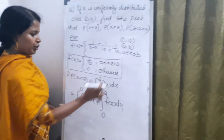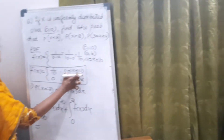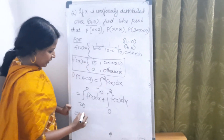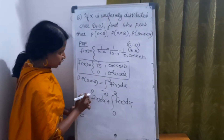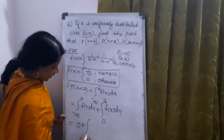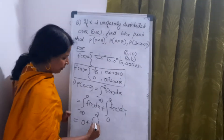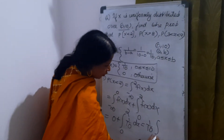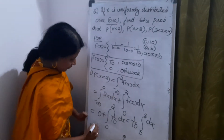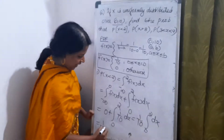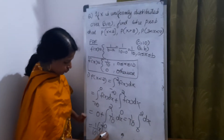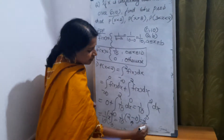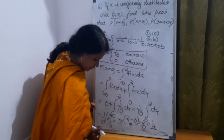From 0 to 2, this range is inside the interval 0 to 10, so f(x) = 1/10. The integral from −∞ to 0 is 0 since f(x) = 0 otherwise. So we have (1/10) × ∫₀² dx = (1/10) × [x]₀² = (1/10) × (2 − 0) = 2/10 = 1/5.